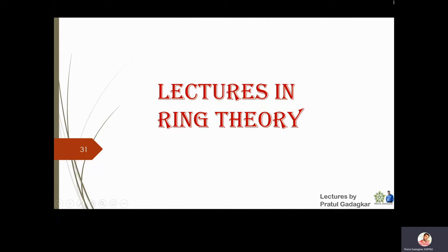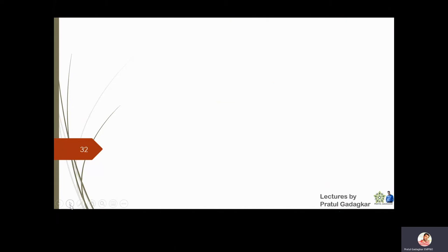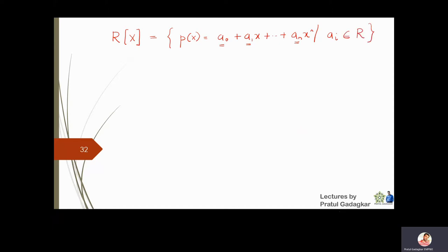In this lecture we are going to discuss polynomial rings. We write it as R[x], which is the set of all polynomials p(x) of the form a0 + a1*x + ... + an*x^n, such that the coefficients a_i are elements of a ring R.